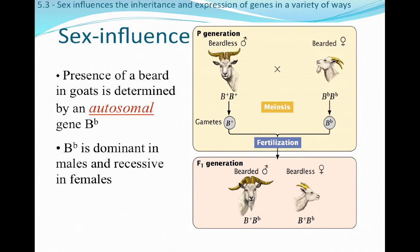The B-little-b genotype is going to be dominant in males but recessive in females. If we look at our inheritance patterns here, we take a beardless male that's homozygous B-plus and cross him with a bearded female that is homozygous B-little-b. Then in that F1 generation, 100% of those individuals are going to have the genotype B-plus-little-b. But if they're male, they're going to have a beard, and if they're female, they're not — but their genotypes are the same.